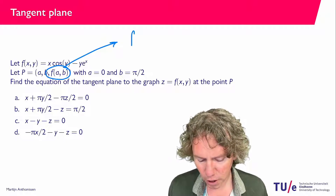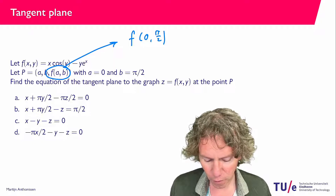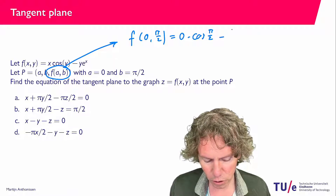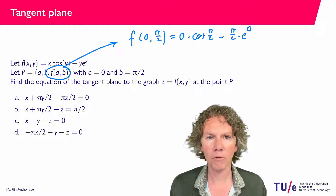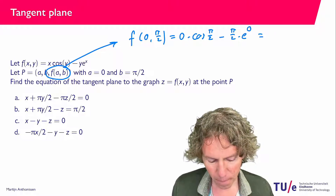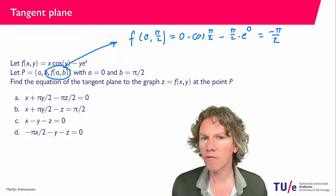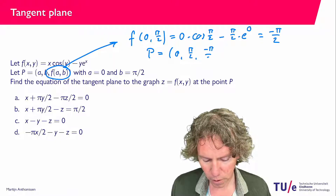We need to compute f of 0 and pi over 2. Plugging into the equation for the function, we find 0 times cosine of pi over 2 minus pi over 2 times e to the power of 0. Zero times something is 0, so that disappears, and e to the power 0 is 1. So we find minus pi over 2. The point p therefore has coordinates p equals (0, pi over 2, minus pi over 2).